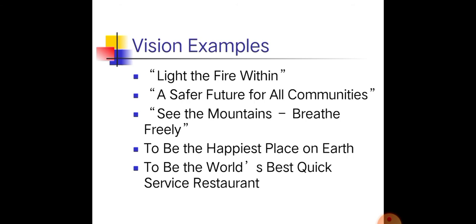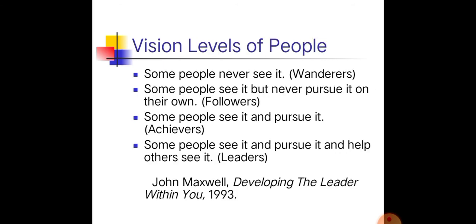Vision levels of people: some people never see it, which is why they are not able to achieve their goals. Some people see it but never pursue it — they take it for granted. Some people see it and pursue it — that's cheaper. Some people see it, pursue it, and help others see it — that's a leader. According to John Maxwell in Developing the Leader Within Us (1993).